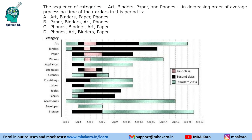Next question: Arrange the categories arts, binders, paper, and phones in decreasing order of average processing times. Paper and phones both have three kinds of orders. Looking at the graph, phone has three orders and the bars are longer than paper's, so phone has a greater average processing time than paper. This allows us to eliminate two of the answer options immediately.